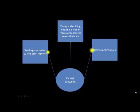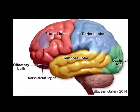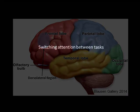The central executive, and SAS, is believed to be controlled from the dorsolateral region of the frontal lobe. Smith and Jonides created a list of functions of the central executive. There is considerable overlap with the SAS executive functions.